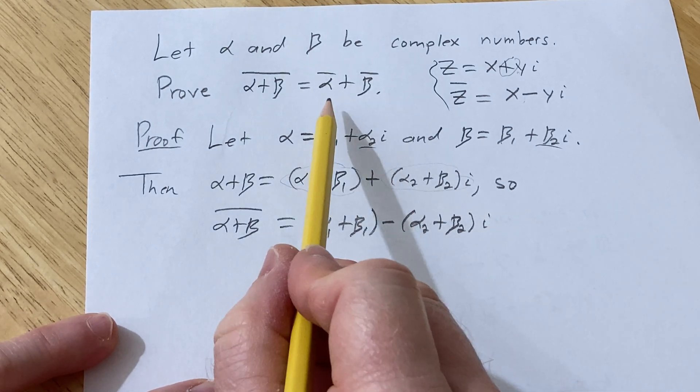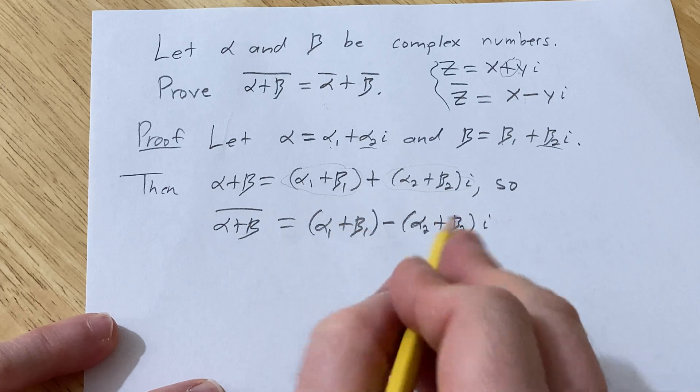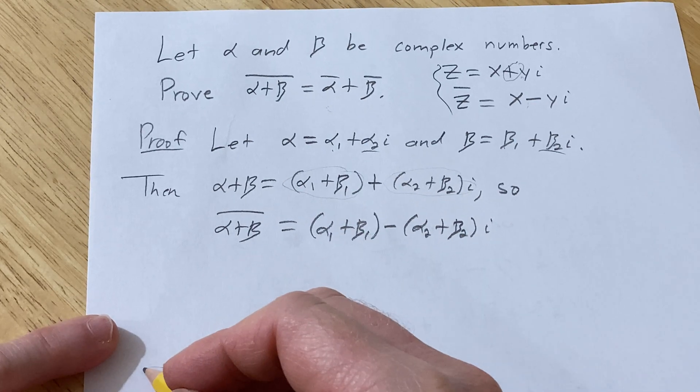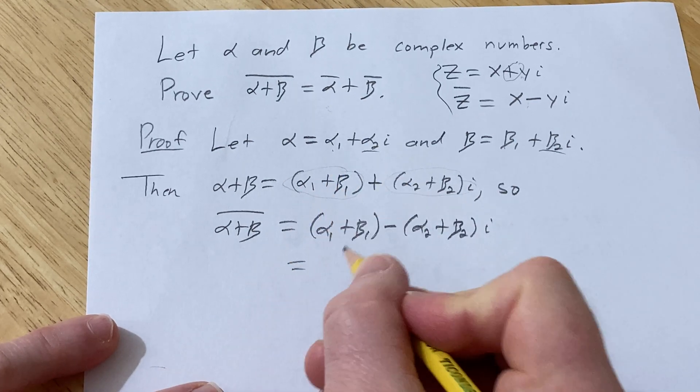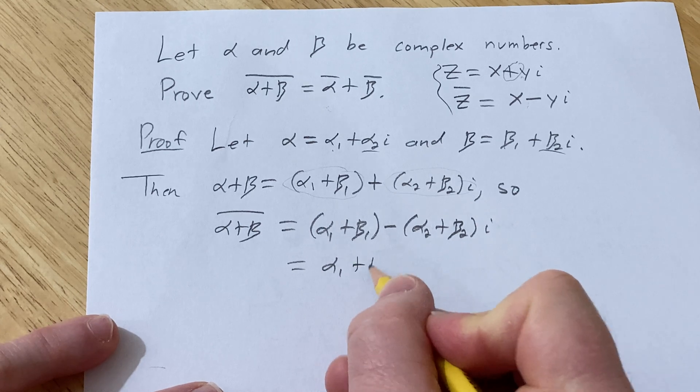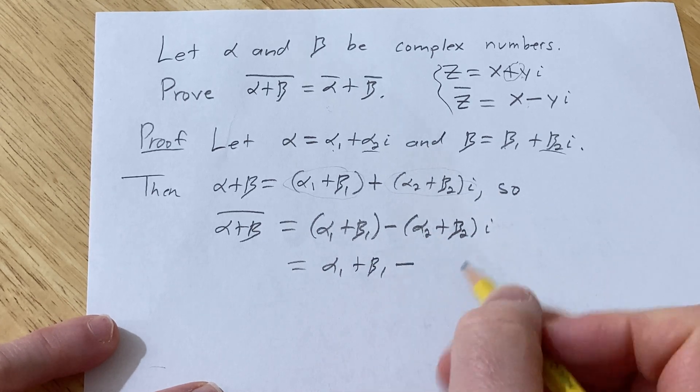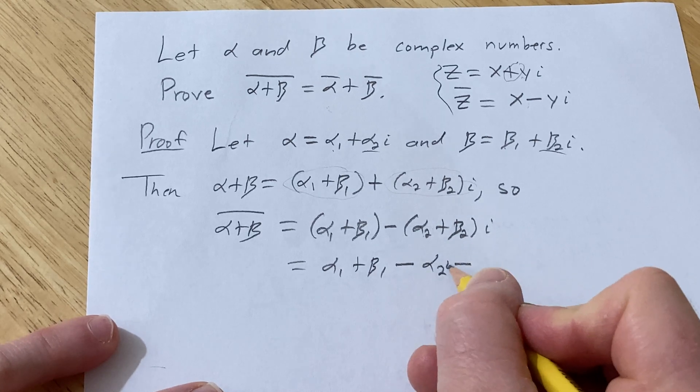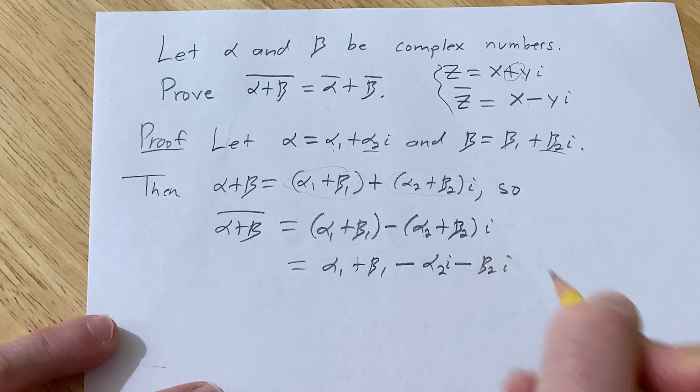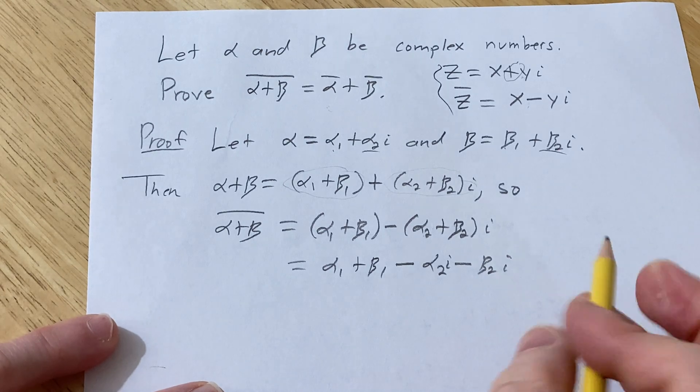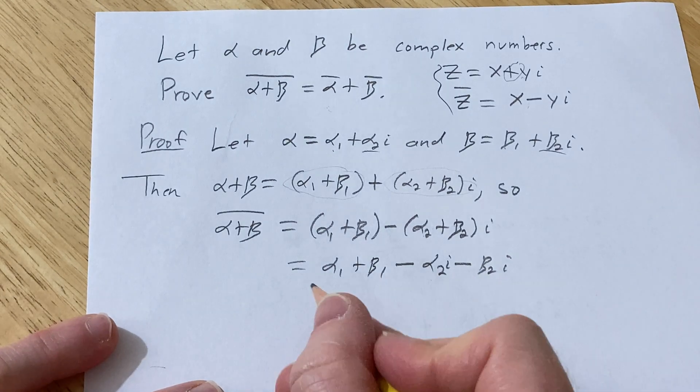Let's keep going here and see if we can end up with this, or we can stop here. Yeah, let's keep going. Why not? So alpha sub 1 plus beta sub 1, and this is going to be minus alpha sub 2 minus, with an i, beta sub 2i.